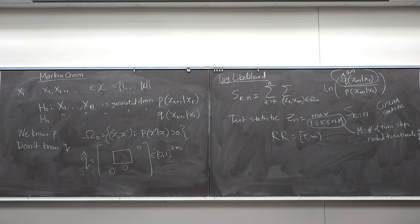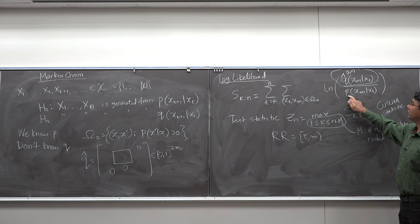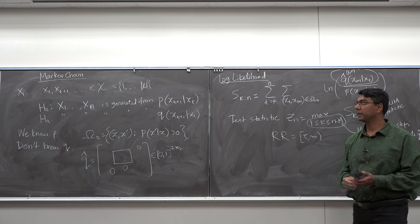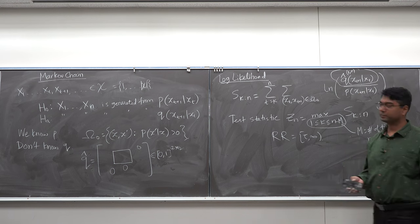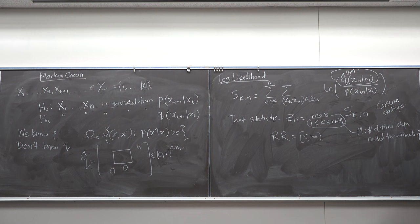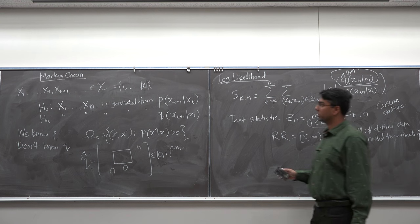The Q-hat approach is also not robust to replay attacks. In the case of a replay, Q-hat will be very close to P, so you will not be able to detect the attack. We will talk about the dynamic watermarking algorithm in a few days — on Wednesday or next week — which allows us to be robust to replay attacks.